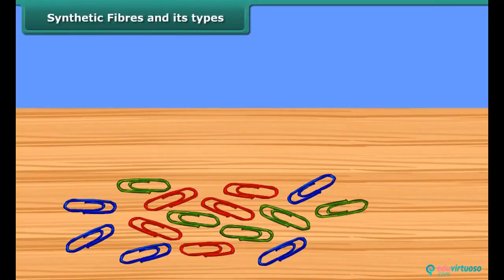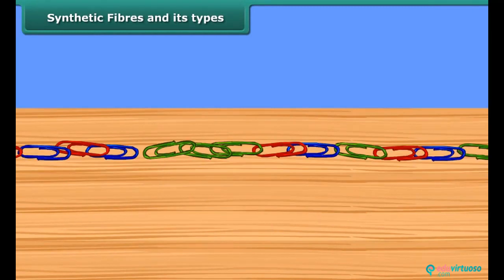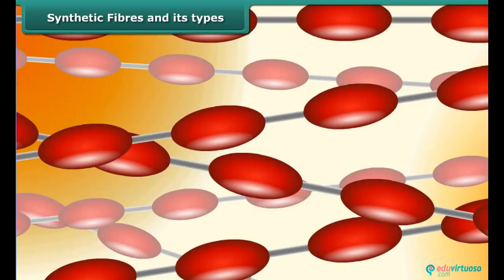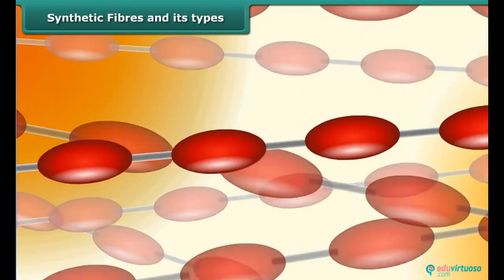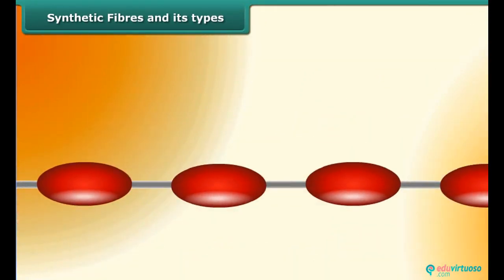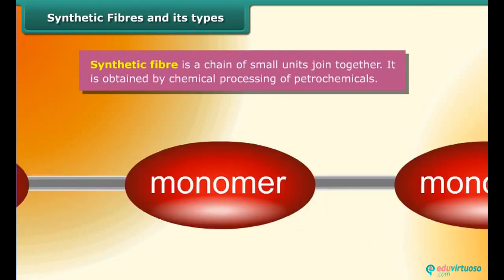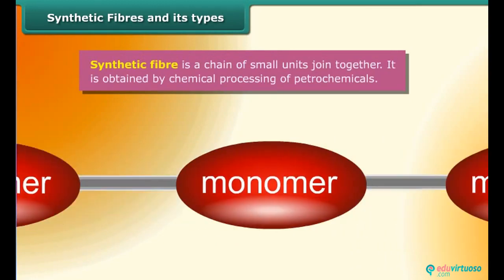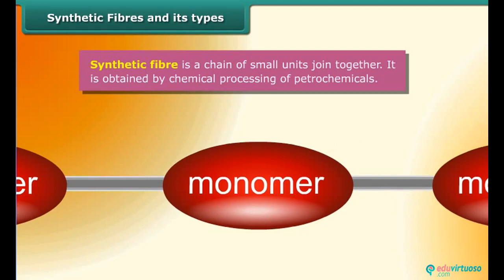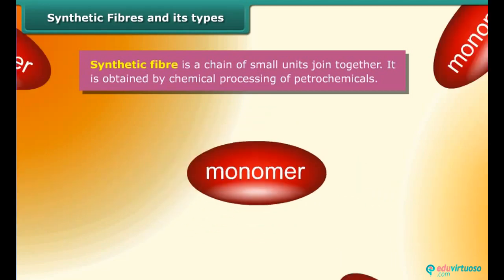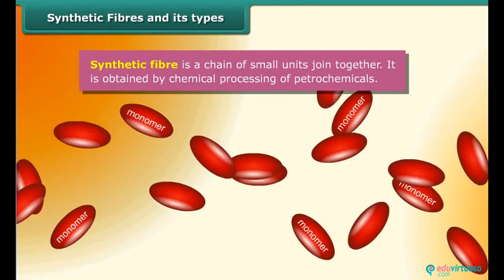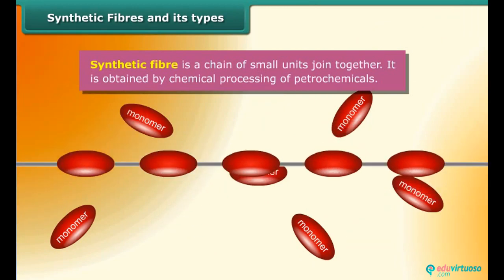Now let us join together a number of paper clips. What do you observe? This chain of paper clips is similar to the organization of a polymer. What is a polymer? Here, many small units combine to form a large unit known as a polymer. Each small unit is actually a chemical substance and is called a monomer.